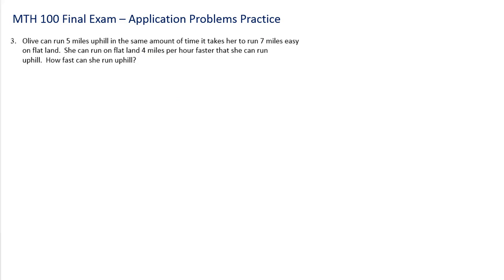Next: Olive can run five miles uphill in the same amount of time it takes her to run seven miles on flat land. She can run on flat land four miles per hour faster than she can run uphill. How fast can she run uphill? These are called uniform motion problems, and you have covered these. One of these will be on the final — it's a student learning outcome.